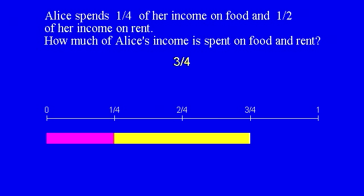To be a part-of-part problem, the second part must be a subdivision of the first part. This is not a part-of-part problem since both parts refer to the original whole. Alice spends one-fourth of her income on food and one-half of her income on rent — both fractions refer to the original whole income. How much of Alice's income is spent on food and rent? Three-fourths. So that's an addition problem.